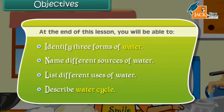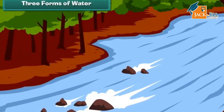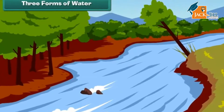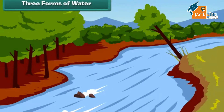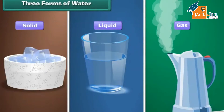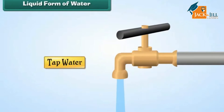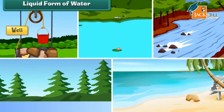There are three forms of water: solid, liquid, and gas. The water we get from taps is in liquid form. Other examples of water in liquid form are water found in wells, rivers, lakes, and oceans.